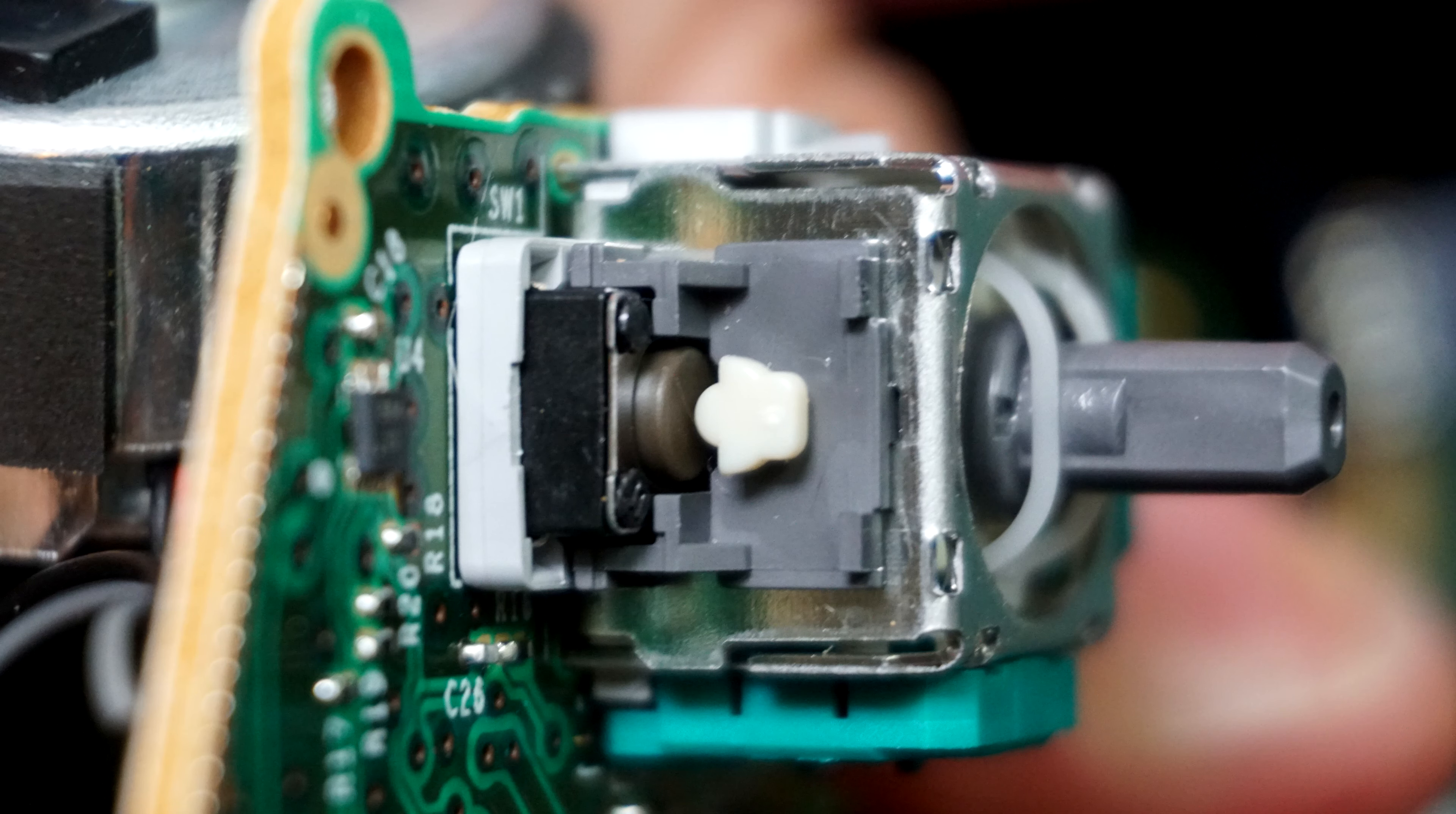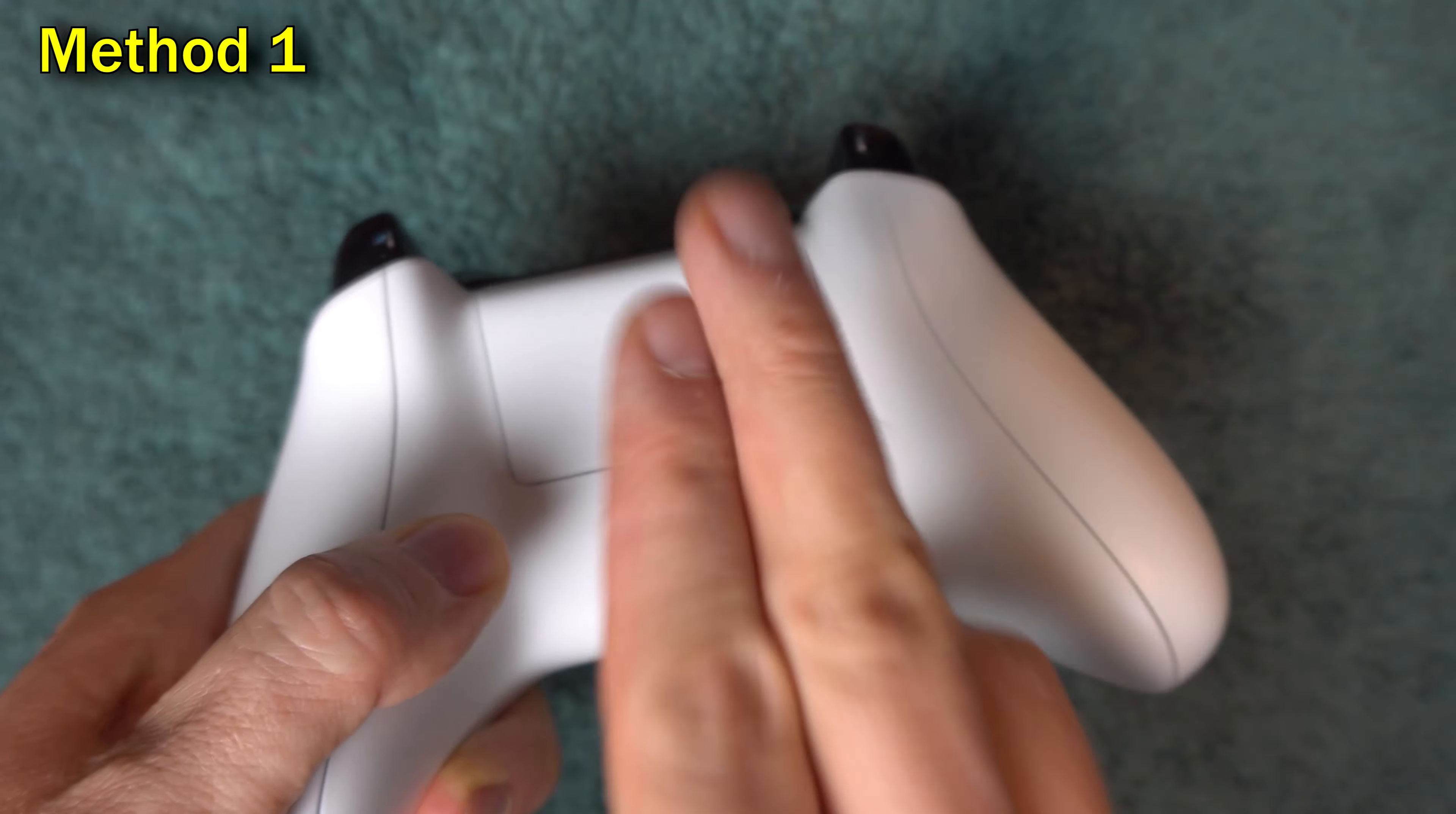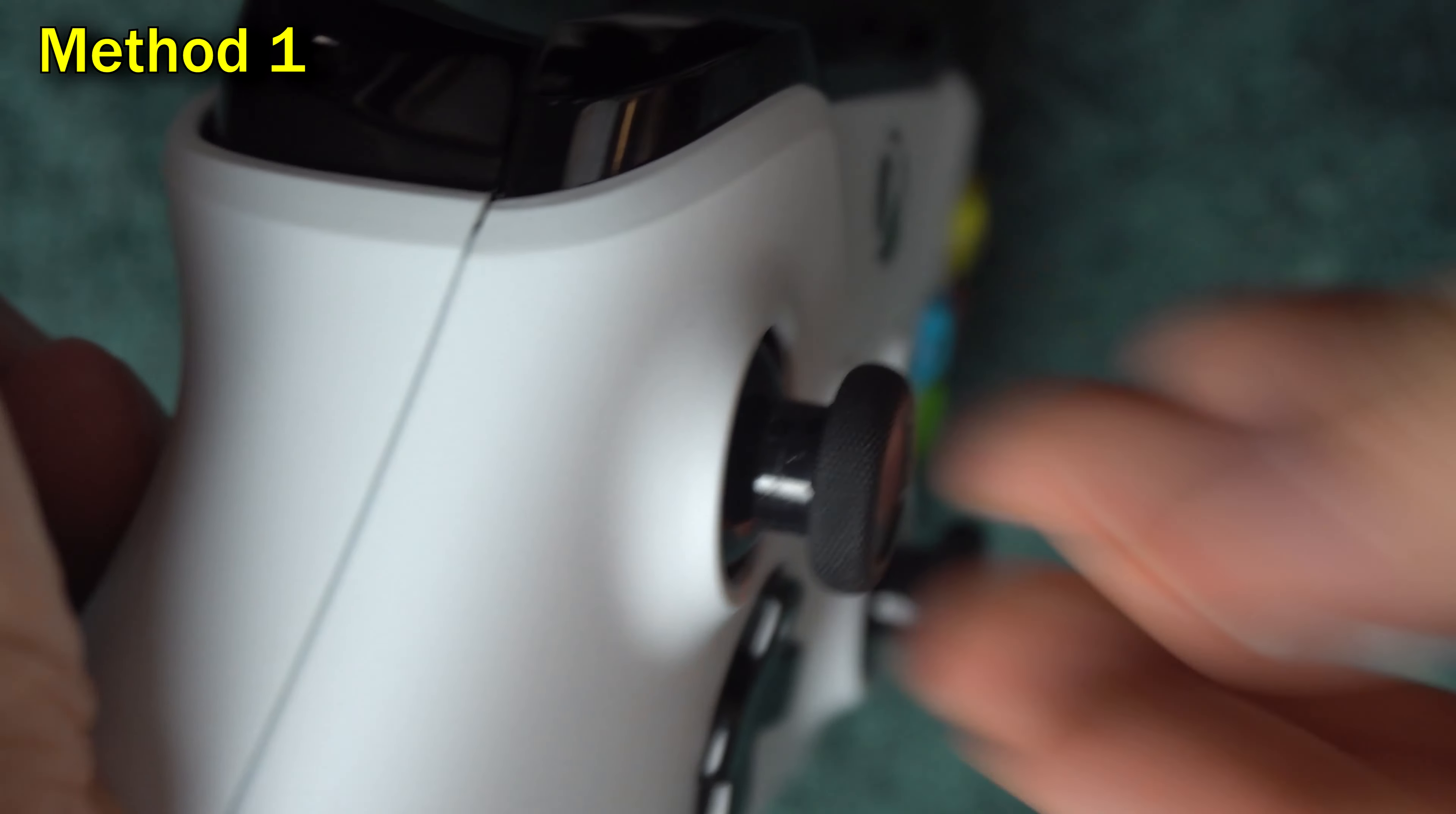Here's method one: pull the stick up, you'll feel it kind of snap out of place, then turn it over and tap underneath it. There may be debris inside the stick mechanism, so the idea here is to shake it loose, then make sure you push down on the stick and snap it back into place.